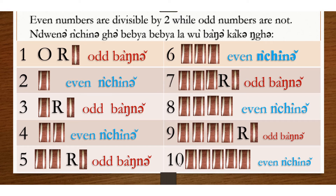10 is divisible by 2. When you divide 10 by 2, there is no remainder, so 10 is even.